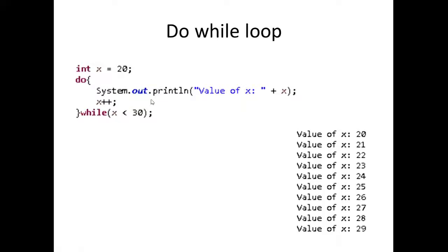This is going to continue just like before until we get to the number 30. As you can see here, we end at 29. When it makes its way to 30, it's going to break right out of the while loop automatically because this condition is not being met. That's pretty much how the do-while loop works.